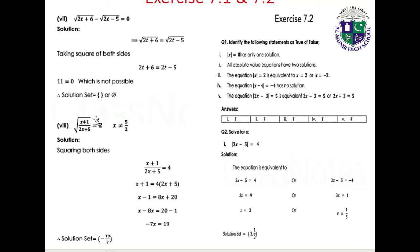Part 8: √((x plus 1)/(2x plus 5)) equals 2, where x is not equal to minus 5/2. Squaring both sides: (x plus 1)/(2x plus 5) equals 4, so x plus 1 equals 8x plus 20, giving x minus 8x equals 20 minus 1, thus minus 7x equals 19. Solution set: {-19/7}.